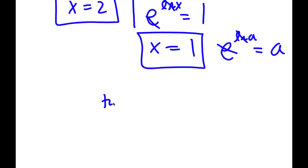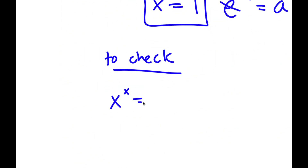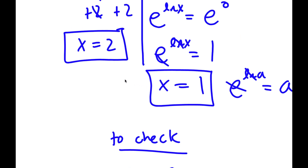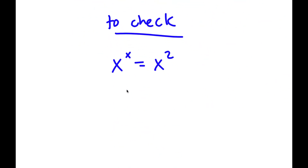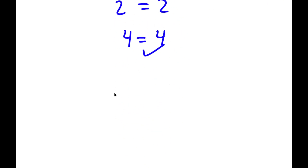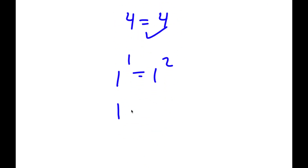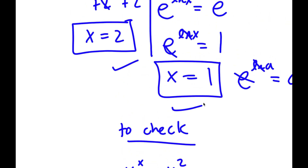Now to check — my original equation was x to the power of x is equal to x to the power of 2. If x equals 2, I have 2 to the power of 2 is equal to 2 to the power of 2, which is 4 equals 4, so this is right. If x equals 1, I have 1 to the power of 1 is equal to 1 to the power of 2, which is 1 equals 1, so this is right as well. So my two solutions are correct.